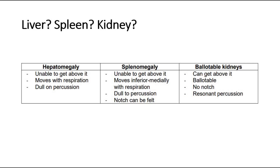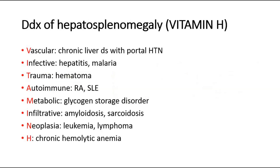This table summarizes how we differentiate between these three organs. The examiner might also ask for your differential diagnosis depending on your findings. If there is hepatosplenomegaly, they might ask for your differential diagnosis — so these are the causes that may cause both enlargement of the liver and spleen, using the mnemonic VITAMIN H.